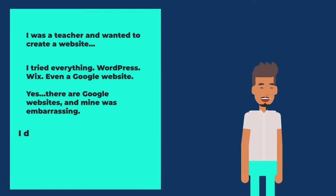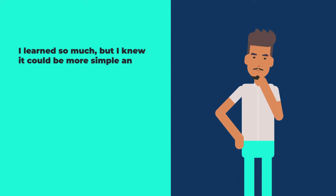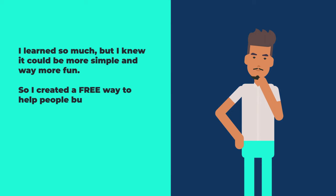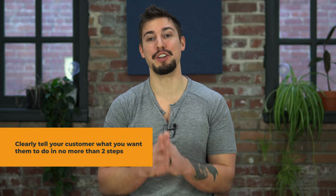I discovered Squarespace and became obsessed, spent a ton of time and money taking courses — showing authority and empathy. Then I said I learned so much but knew there could be a simpler, more fun way, so I created a free way to help people build amazing one-of-a-kind Squarespace websites. Next is the call-to-action section. What do you want your visitor to do — schedule a call, fill out a form, opt in for a lead magnet, start a free course, or live chat? Whatever you want them to do, tell them explicitly. In no more than two steps, people will do what you tell them, but you have to tell them right up front.